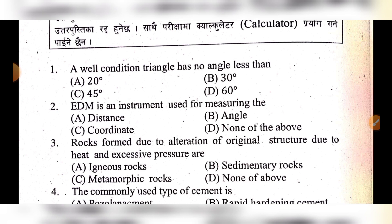Question 3: A rock formed due to alteration of original texture due to heat and excessive pressure — option A: igneous rock, option B: sedimentary rock, option C: metamorphic rock, option D: none of the above. The answer is option C: metamorphic rock.